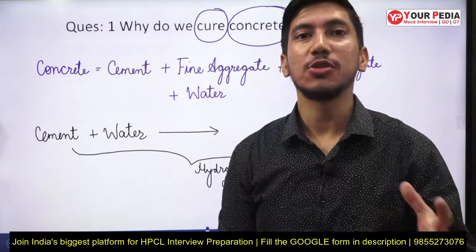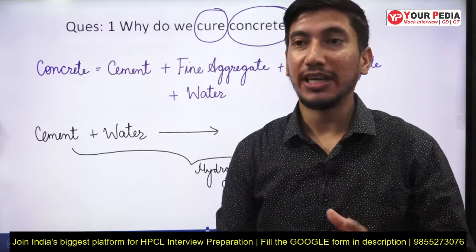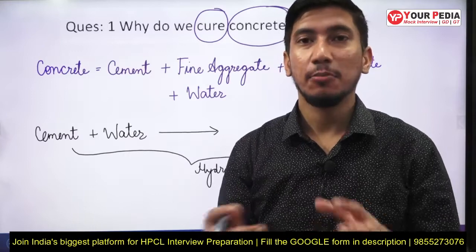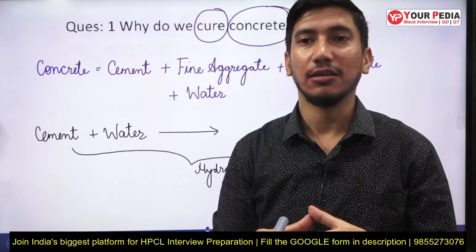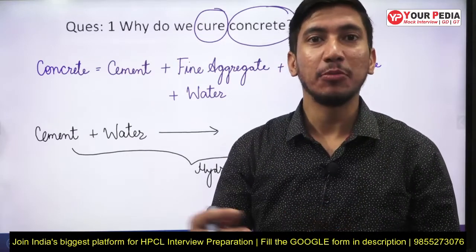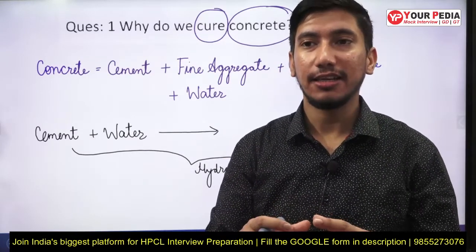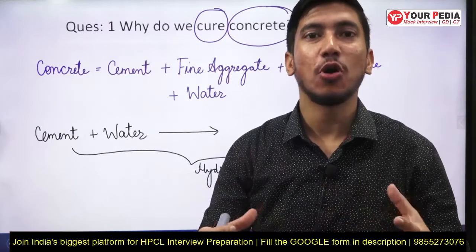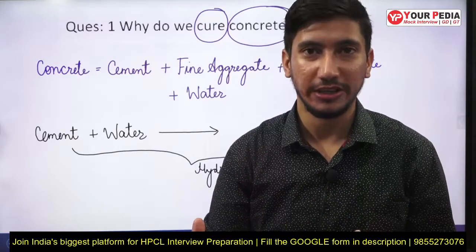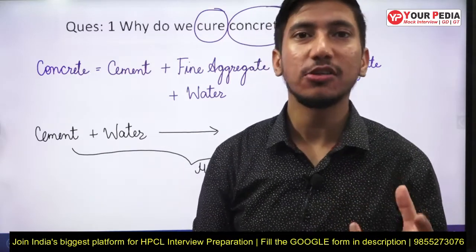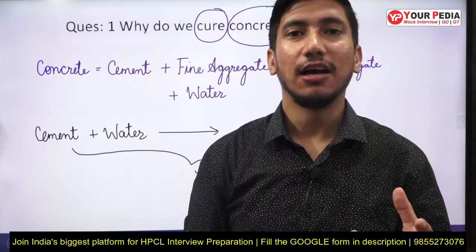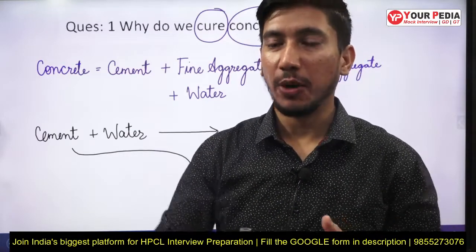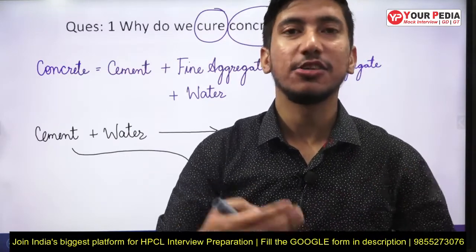Concrete is such an interesting building material. It is in a plastic state when wet, so it can be molded into any desired shape and size. Over time it sets and hardens, and gets converted into a hard, strong, load-bearing material. The question is: how does concrete achieve this transformation and where does it get its strength?